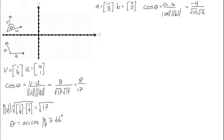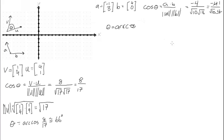To find theta, we write theta equals arccos of negative 4 over root 10 times 4. This simplifies — the 4s cancel — leaving arccos of negative 1 over root 10, which equals some angle. This is our angle theta, and it looks like it's past 90 degrees.